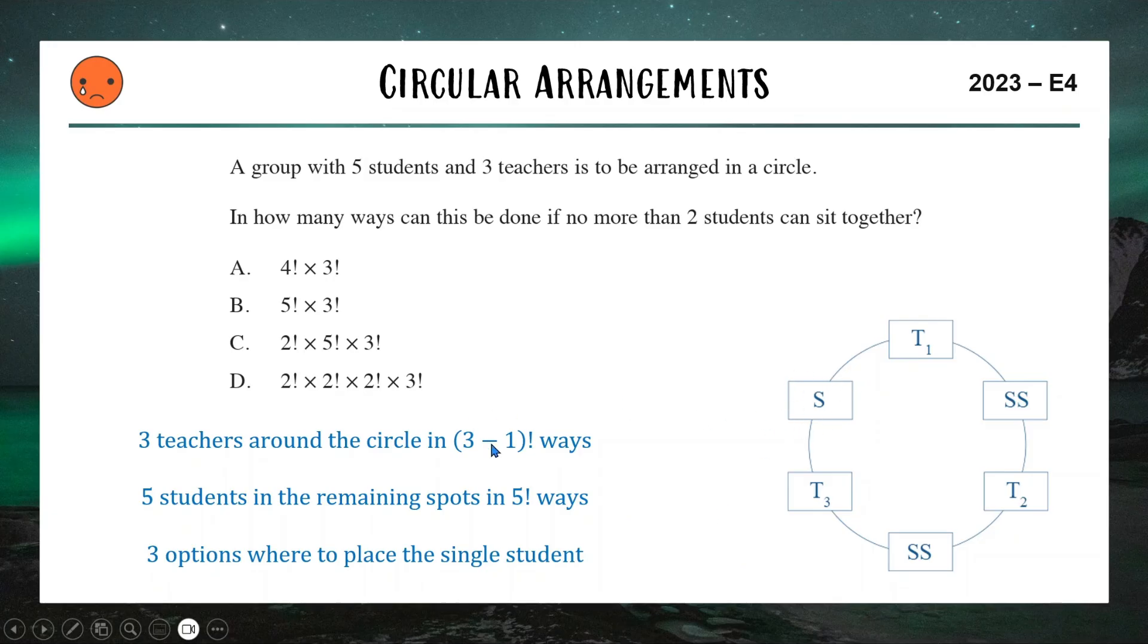So putting that all together, we have four factorial for the teachers, then we have five factorial for the students, and then multiplying by three for the single student gives us this. And which of our four options does this look like? Well, I can take the two factorial and multiply it by three, and that's going to make it into a three factorial. And that's why B is going to be our correct answer for this band six multiple choice question.